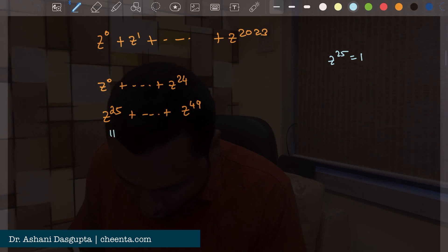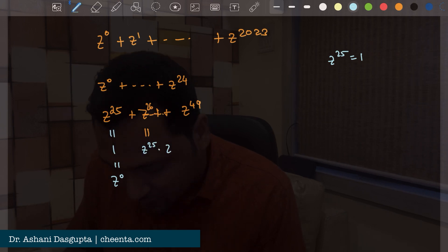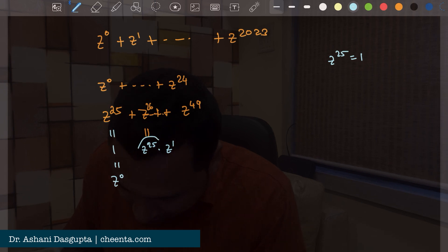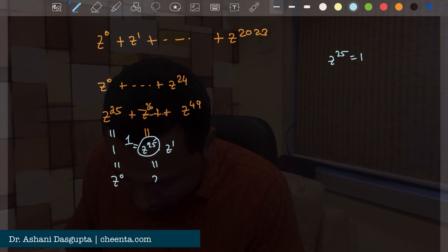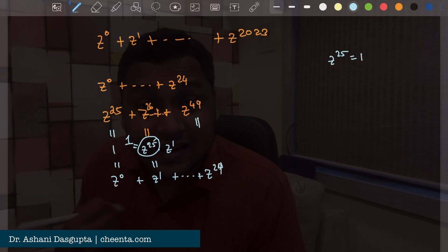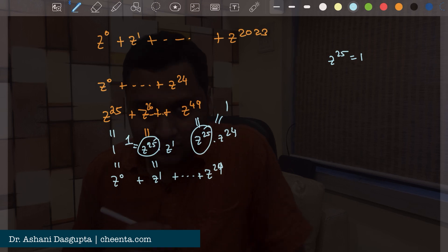So z to the power 25 is 1 which is again z to the power 0. Then we have z to the power 26 which is equal to z to the power 25 times z to the power 1. Now z to the power 25 is 1. So this is just z to the power 1. So basically this is up to z to the power 24. z to the power 49 is z to the power 24 because this is z to the power 25 times z to the power 24 and z to power 25 is 1.